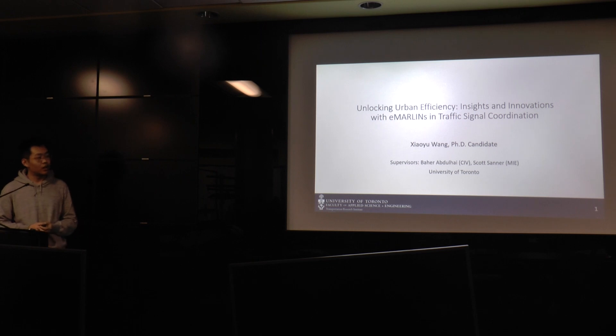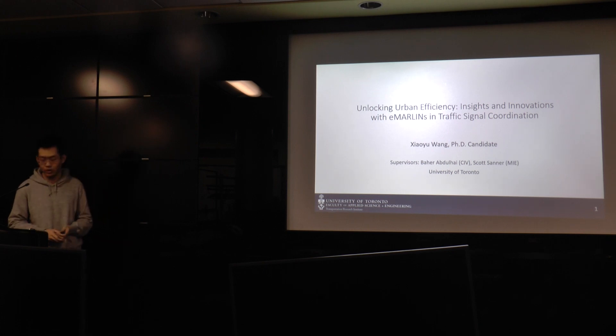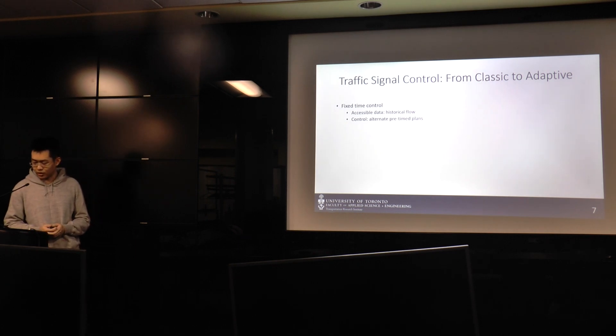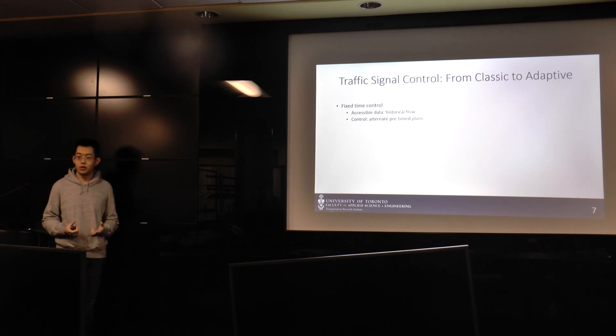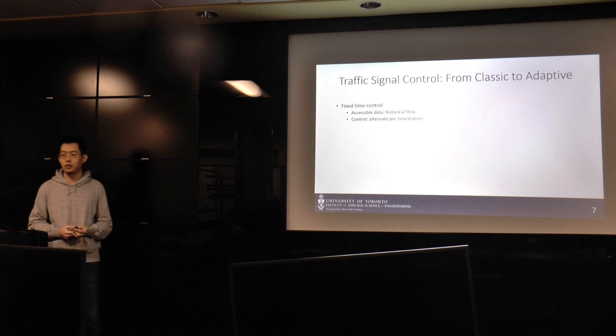We're going to share some insights in how to combine the AI tools into the application field, for example, in TSC. So before we start, I'm going to cover some basic terminologies in this field. Traffic signal control. In traffic signal control, we want to optimize the signal plan, or we call the signal timing plan, to optimize the traffic flow in a transportation network, for example, downtown Toronto, or any surface road network in the city. It has been developed for more than half a century.